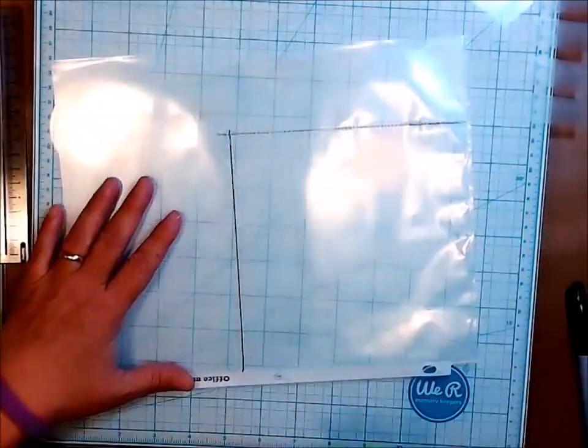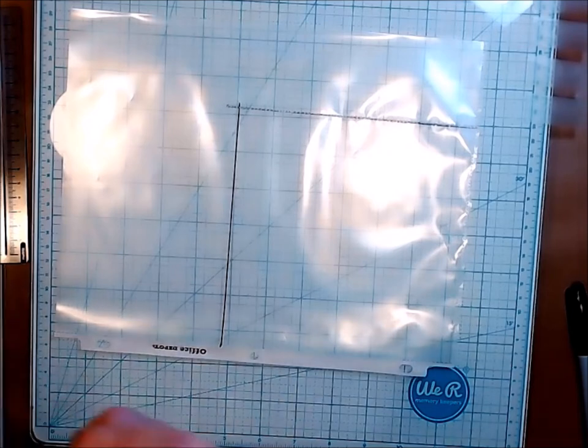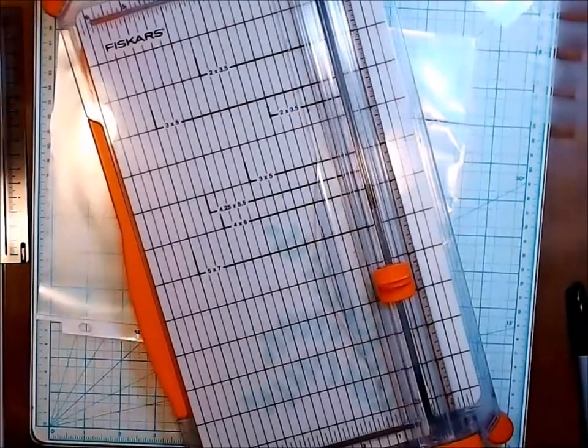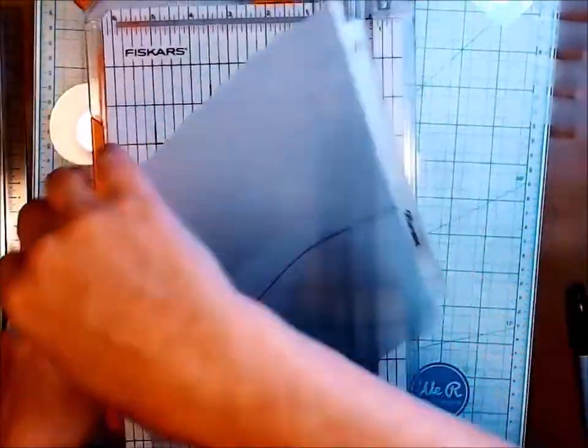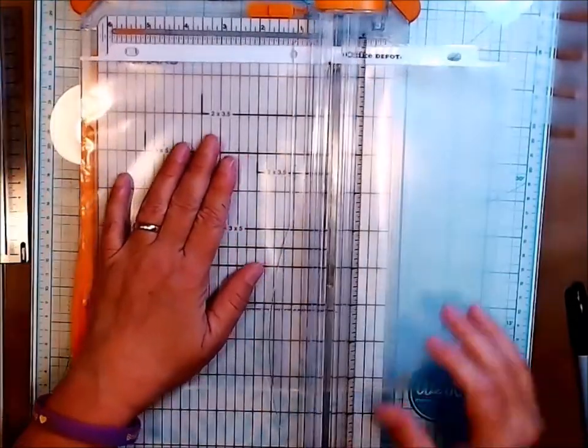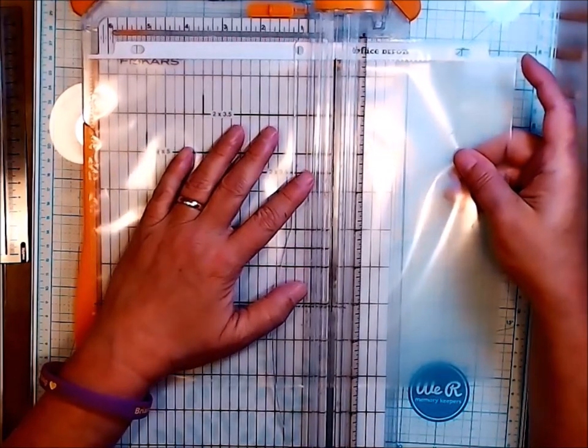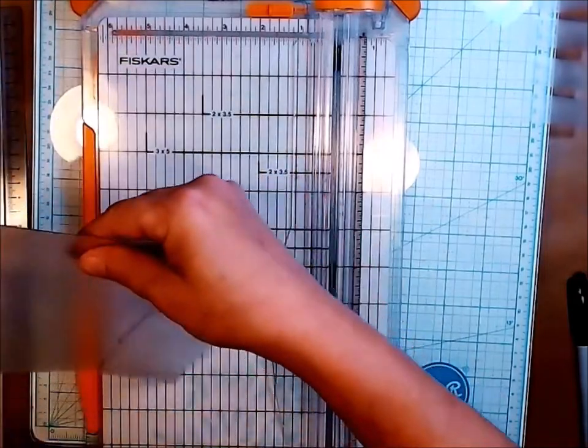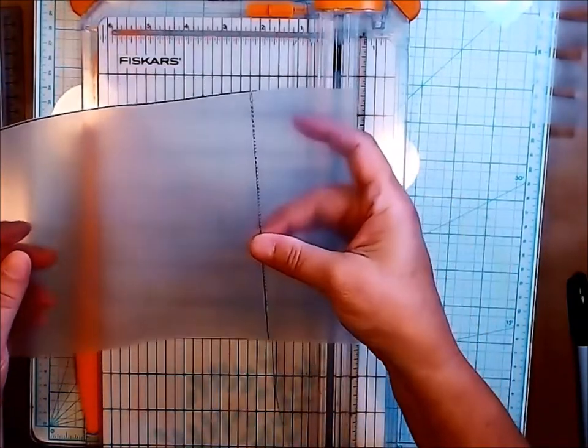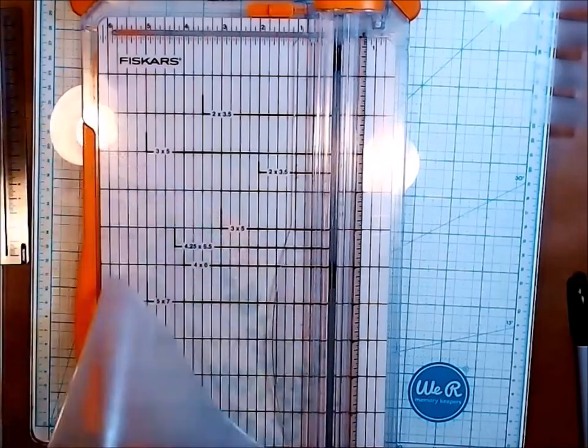Next thing I'm going to do - of course it's buried because that's just the way things go - I'm going to get out my Fiskars cutter. I'm going to pull this out and line the cutting line up right there. So this is the top. This is the line that we perforated, that we glued shut.